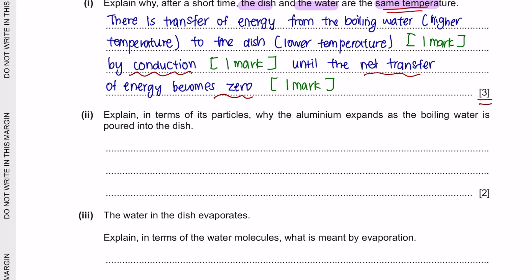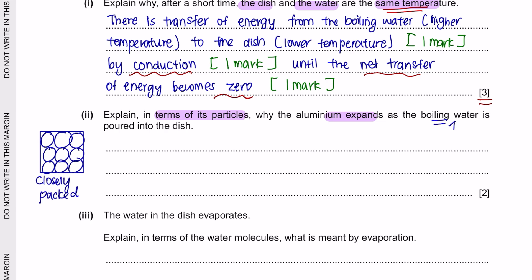Part 2: explain, in terms of particles, why the aluminium expands as the boiling water is poured into the dish. Solid particles are closely packed. Boiling water is at a very high temperature, so when the particles receive this heat they gain kinetic energy. As they gain kinetic energy they move further apart from each other, and this is what causes the solid to expand.